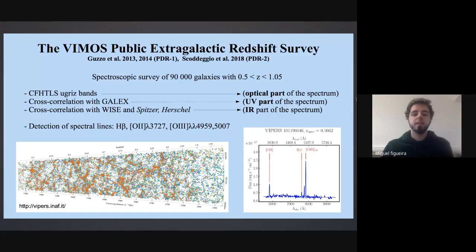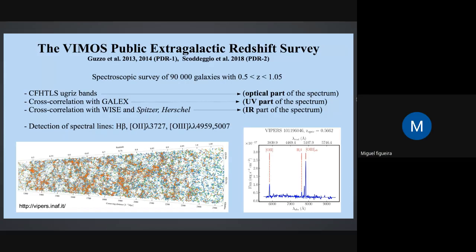To do this, we use the VIMOS Public Extragalactic Redshift Survey - VIPERS. VIPERS is a spectroscopic survey of around 90,000 galaxies between redshift 0.5 and 1.5. On the bottom image on the left, we can see one of the two fields, W1, with all the galaxies measured in VIPERS. Since this survey is based on CFHTLS, we have the UGRIZ bands, so roughly the optical part of the spectrum. The VIPERS catalog was cross-correlated with GALEX, so we also have the UV part. It was cross-correlated with WISE and Spitzer, so we also have the infrared part of the spectrum.